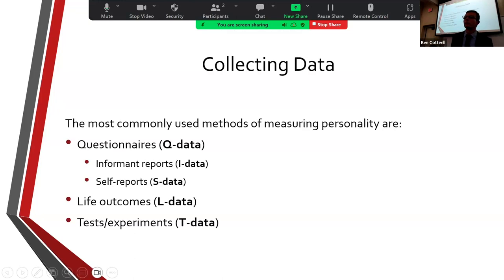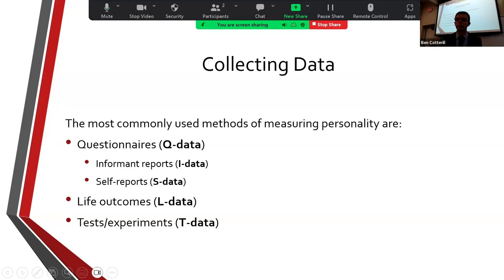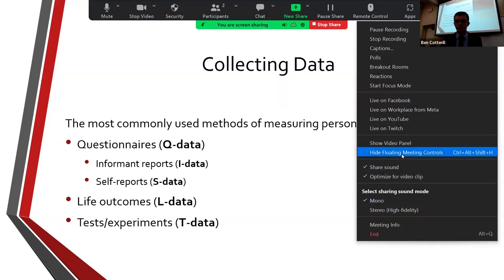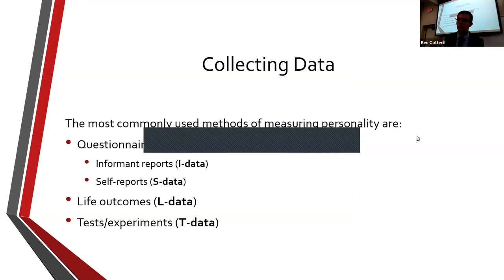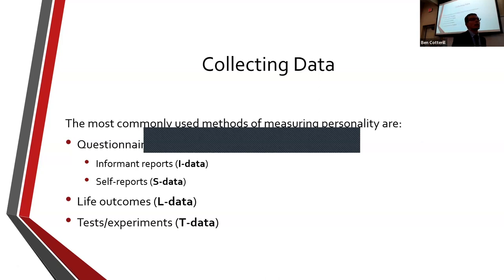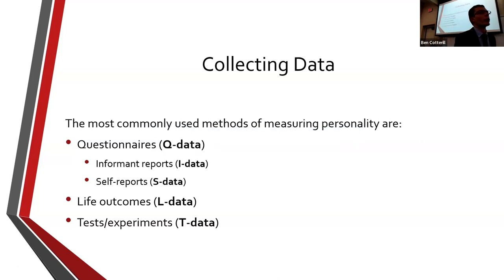In personality research there are various ways in which we can collect data. The most common is questionnaire data, or Q data. This is going to be a type of objective test, like we talked about last time.